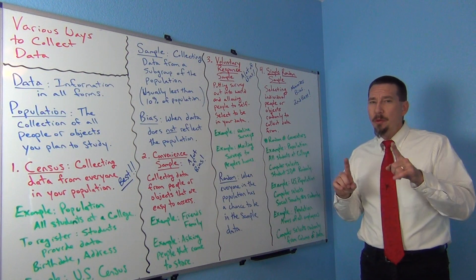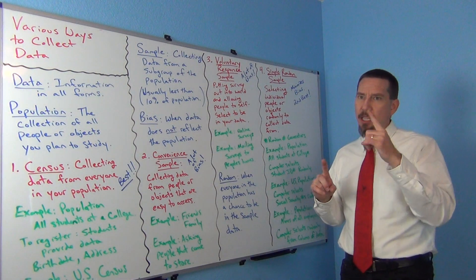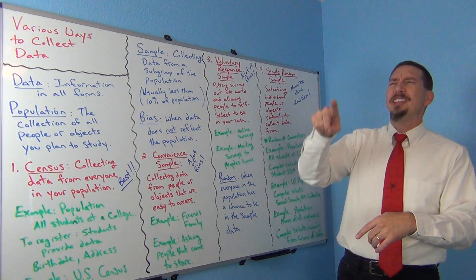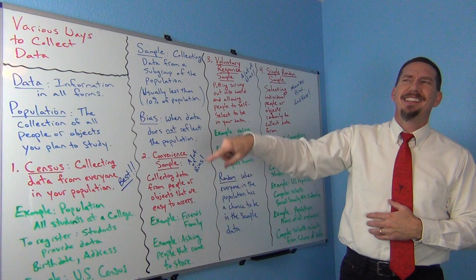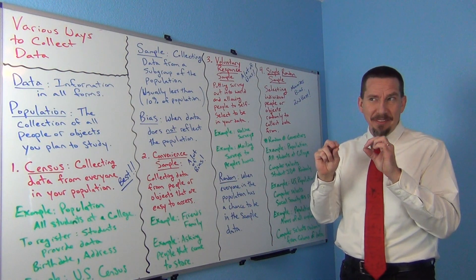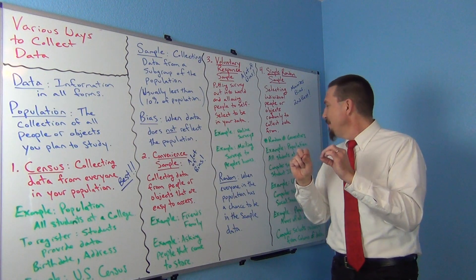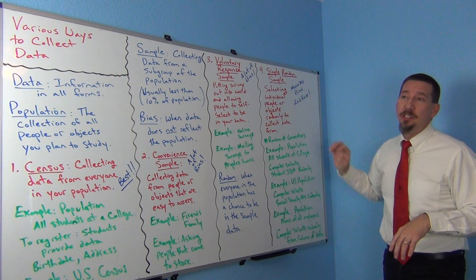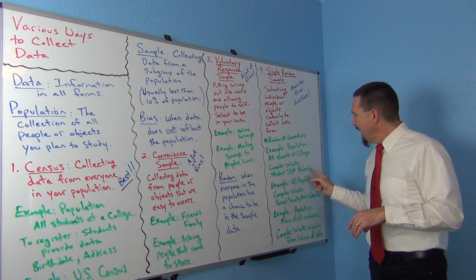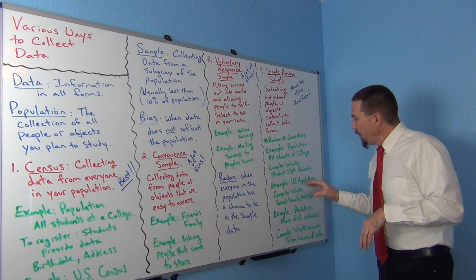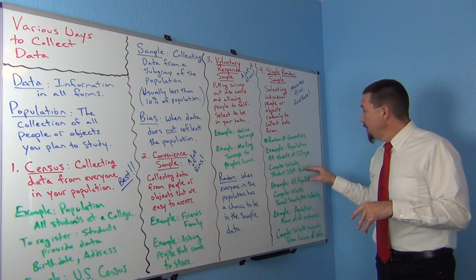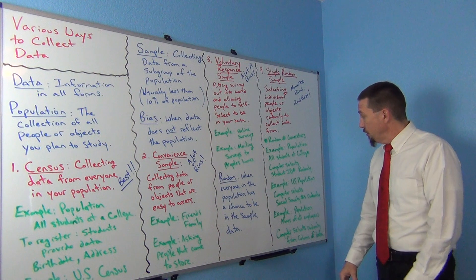Don't think that you can pick randomly with your brain. Someone always says they can just point at things on a page — that's not random. Random means everyone in your population has to have an equal chance of being chosen, or at least a chance. In a simple random sample they usually do have an equal chance. You want a computer or random number generator to pick randomly.